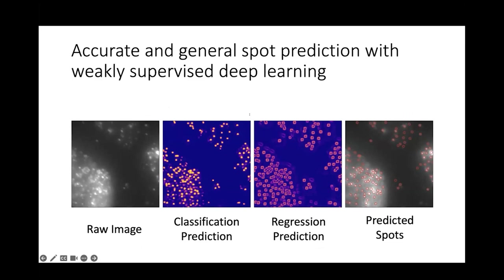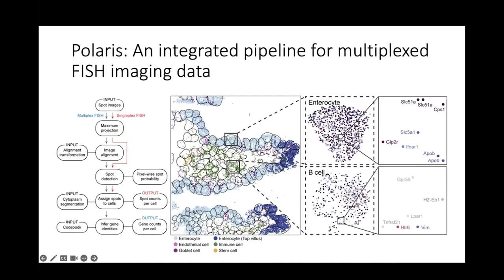Our benchmarking demonstrated that this approach provides superior performance to models trained on either simulated data or data from a single classical algorithm. We see predictions on raw images of which pixels contain a spot, as well as a regression prediction allowing subpixel resolution. Simple thresholding provides concrete spot predictions. We combined this computational primitive for spot detection with our cell segmentation primitive and a graphical model that decodes gene identities. The end result is Polaris — an integrated pipeline for multiplex single-molecule FISH imaging data that requires no manual parameter tuning — which we believe will alleviate a major bottleneck for spatial transcriptomic imaging data.